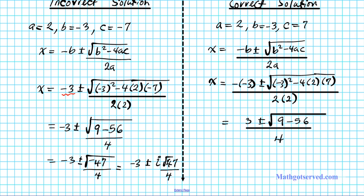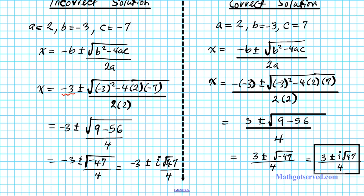So now we'll have 3 plus or minus the square root of negative 47 divided by 4. And then our final answer is going to be 3 plus or minus i root 47 over 4. This is your correct solution when you accurately apply the quadratic formula.